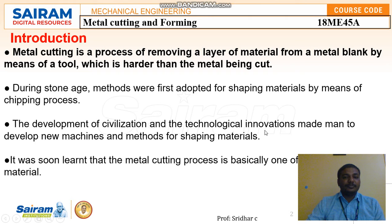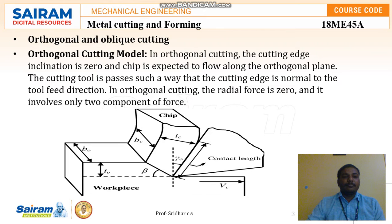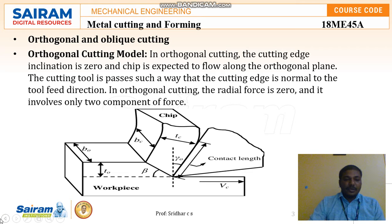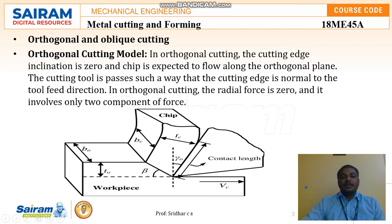Next, we look at the two main types of cutting: orthogonal cutting and oblique cutting. In orthogonal cutting, the cutting edge inclination is zero, and the chips are expected to flow along the orthogonal plane. As seen in the diagram, the workpiece is placed with the tool positioned at the contact line. When material removal begins from one end, the excess material starts coming out in the form of chips.